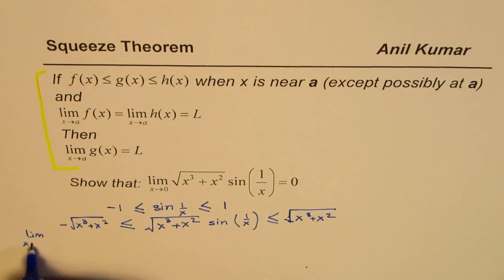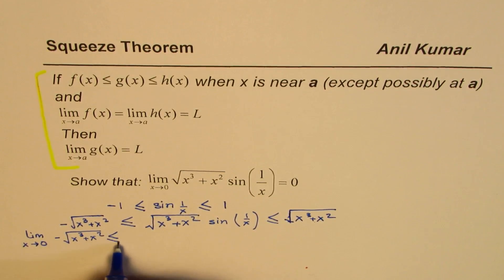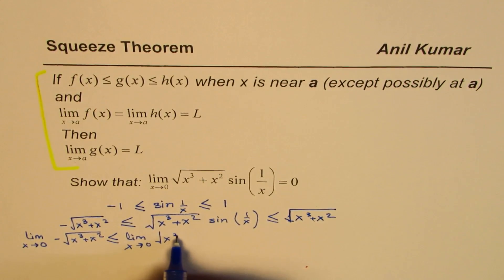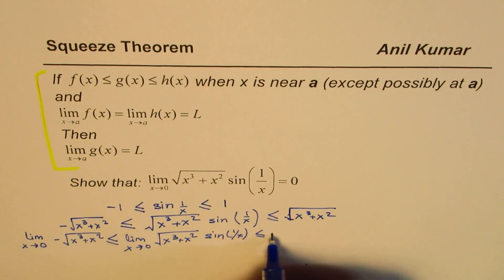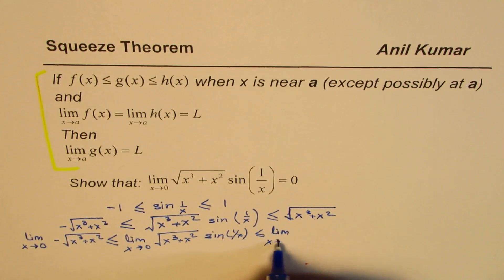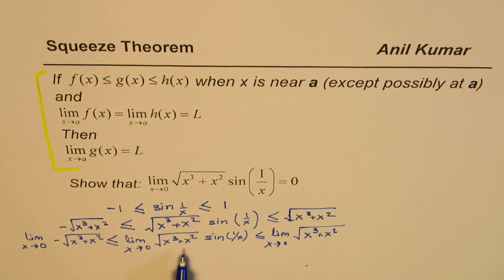Mathematically, we can write this as: the limit as x approaches 0 of negative square root of (x³ + x²) is less than or equal to the limit as x approaches 0 of square root of (x³ + x²)·sin(1/x), which is less than or equal to the limit as x approaches 0 of square root of (x³ + x²). So our target limit is in between these two boundary limits.